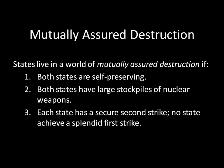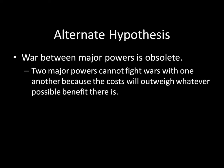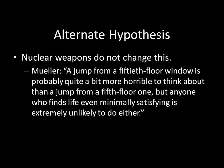But now we have an alternative hypothesis, and it's important to see that there's a big distinction between what mutually assured destruction is going to say and what this is going to say. The alternative hypothesis is just that wars between major powers are obsolete — two major powers cannot fight wars against one another because the costs will outweigh whatever possible benefit there is. Notice that major powers is the key thing; we're only talking about wars between major powers here. This might not be clear in relation to nuclear weapons, because you might be thinking nuclear weapons were already covered by mutually assured destruction. But nuclear weapons do not change things in this framework.